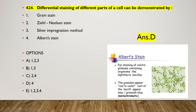Here we see what Albert stain is: for staining of volutin granules containing organisms like diphtheria bacilli, Albert stain is used. The granules appear red to violet, while the rest of the bacilli appear blue or greenish blue — this is called metachromatic staining.